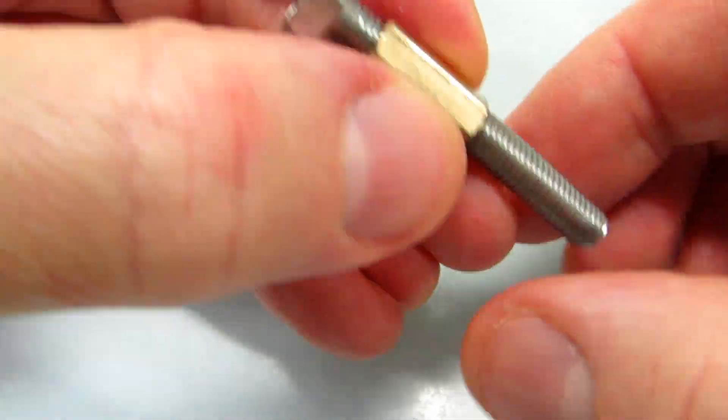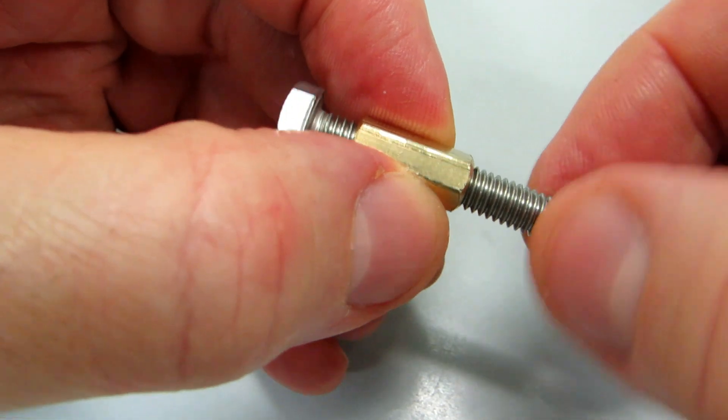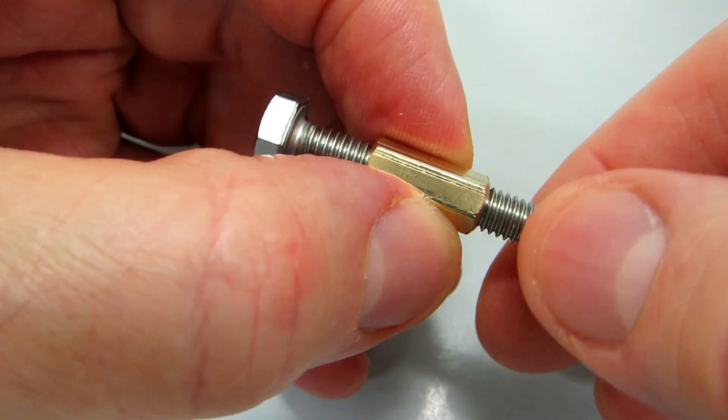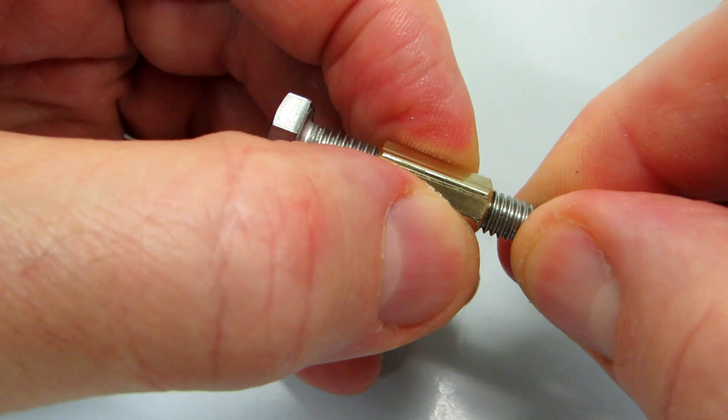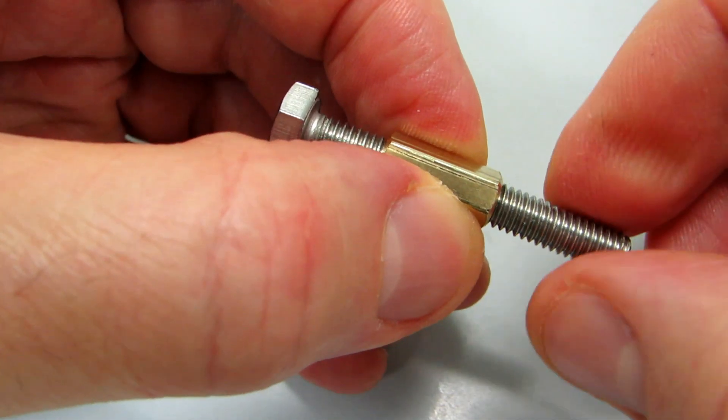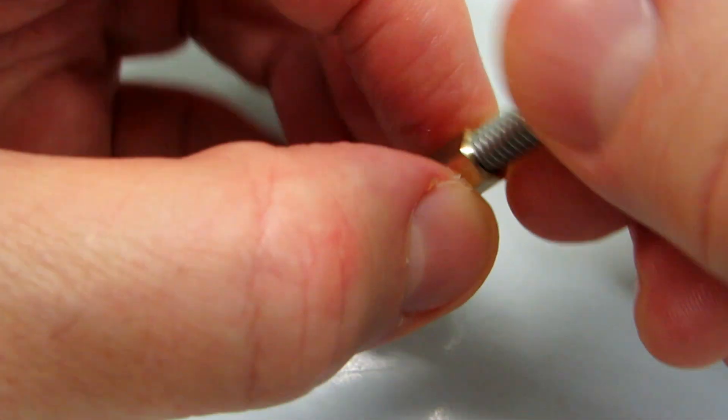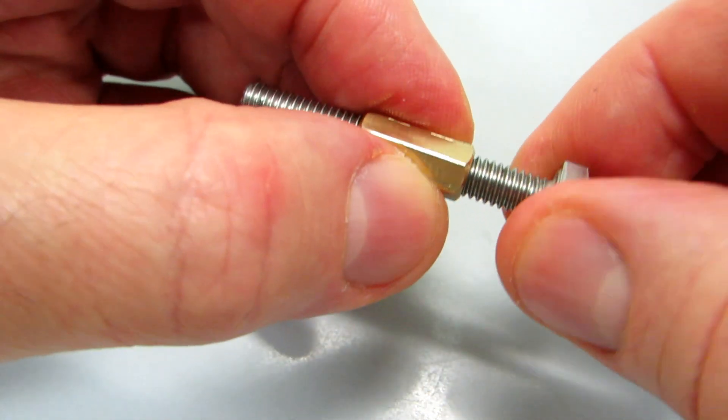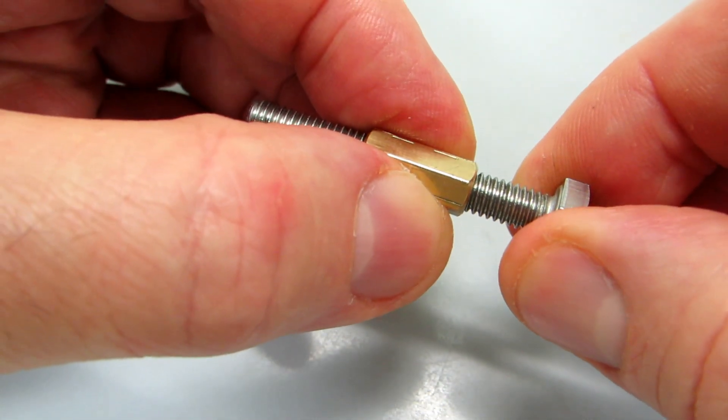When I turn it around, it also only runs clockwise and is locked counter-clockwise. But clockwise in this direction is counter-clockwise in this direction. How can this be?